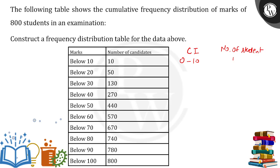Next is from 10 to 20. For 10 to 20, that means 50 minus 10, that is 40. Next is 20 to 30. For 20 to 30, we have 130 minus 50, the last one, so we will be having 80 over here. Next 30 to 40.